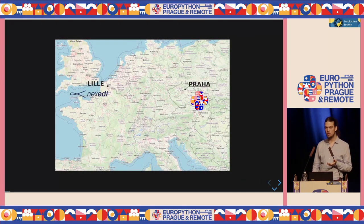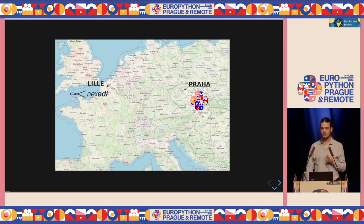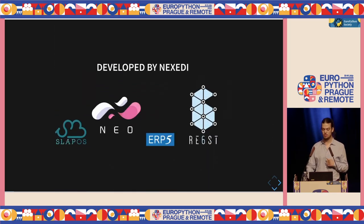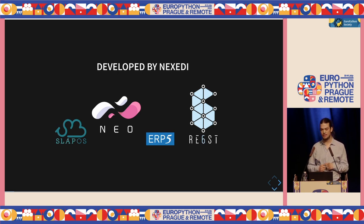I work at a small company in Lille, maybe 40 people, most of them based in Lille, north of France, some of them remotely from across the world. It's a company that has the peculiarity of doing only free software. There are a few softwares developed at Nexedy: SlapOS, a cloud orchestration system; NEO, a distributed database; ERP5, an enterprise resource planning software; and RE6ST, a resilient mesh network using IPv6 over IPv4.